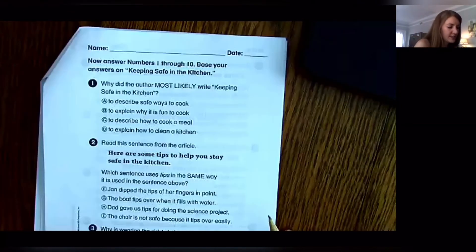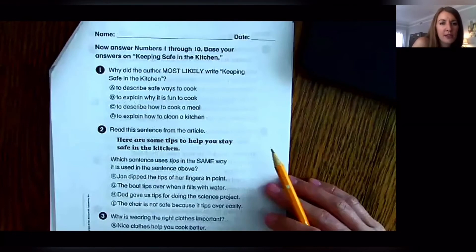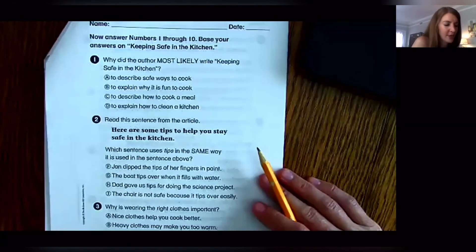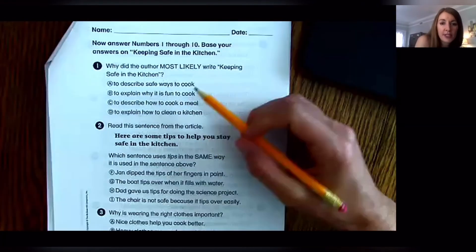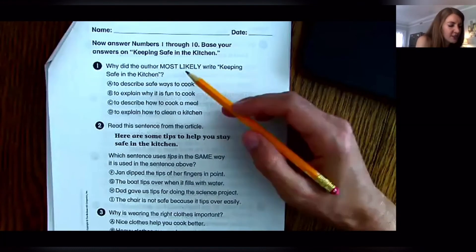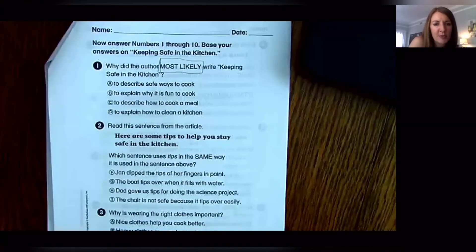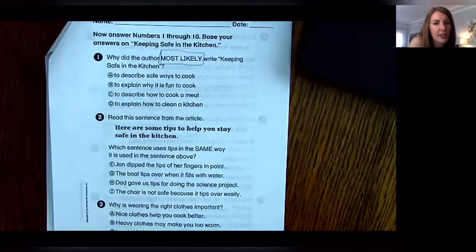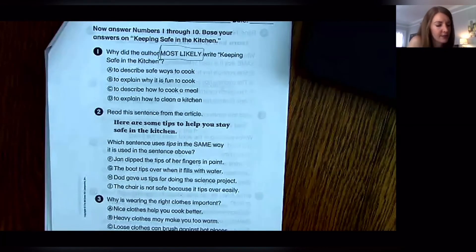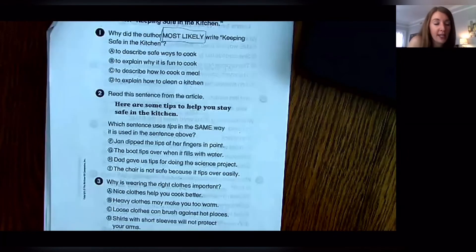All right, I am not going to go over every single question, but I am going to... Okay, this says why did the author most likely write Keeping Safe in the Kitchen? So that's talking about author's purpose. If you go back, we talked about it a little in the first paragraph. Why do you think the author wanted to write this? You're going to go back and see if you can find text evidence.